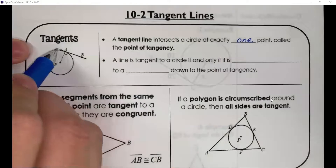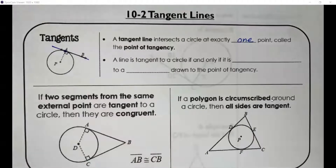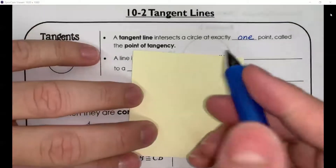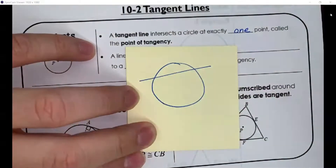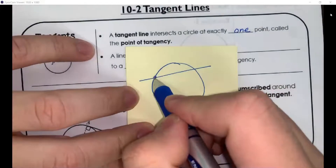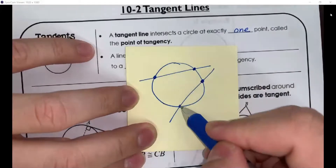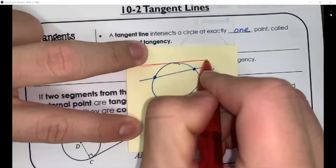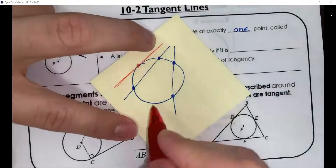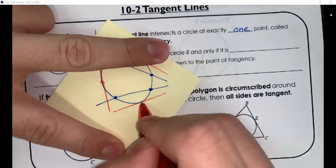You notice over here we have this tangent line on this circle — it crosses the circle at only one point. If you think about any other kind of line that crosses a circle, those cross two points on the circle. What makes tangent lines very unique is that they only cross the circle at one point. Here are several examples of tangent lines.